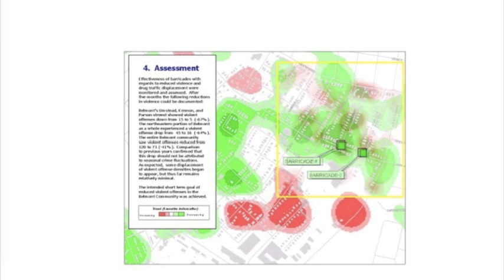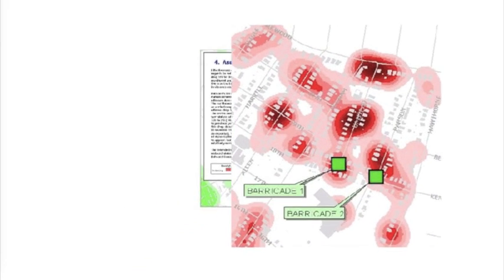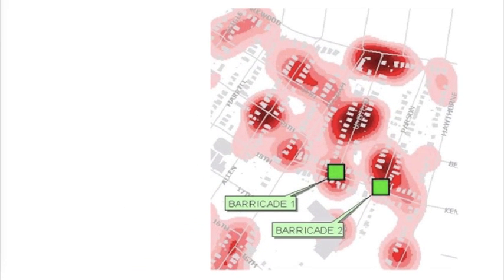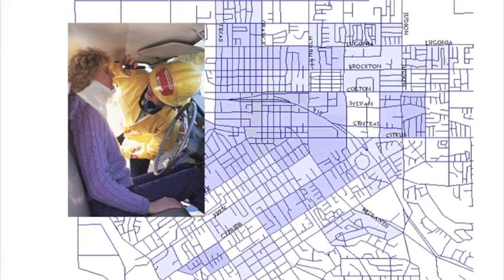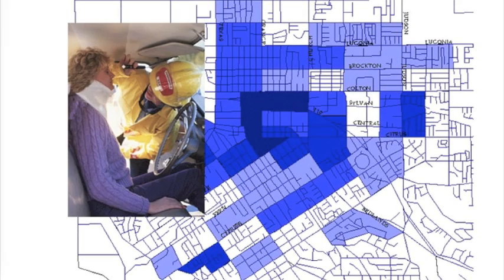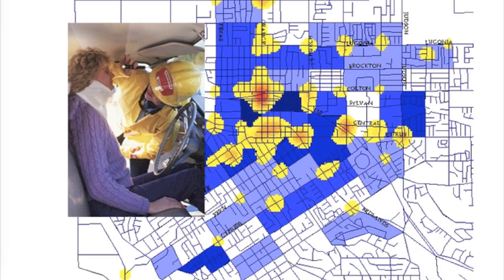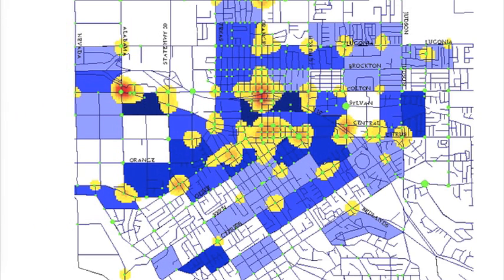GIS can make maps coded by values from the database to help illustrate patterns. For example, to better understand traffic accidents, we might first group collisions by police grid, then as hotspots. Finally, we can show where citations are issued. Another look at the same data can show accident locations over time.